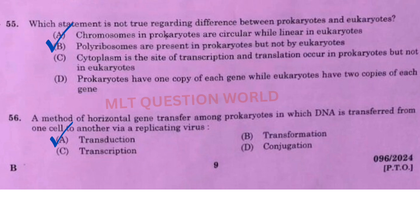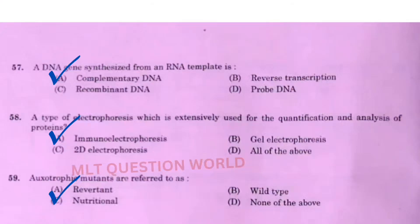Next one: A method of horizontal gene transfer among prokaryotes in which DNA is transferred from one cell to another via a replicating virus — the right answer is option A, transduction. Next question: A DNA gene synthesized from an RNA template — the right answer is option A, complementary DNA.